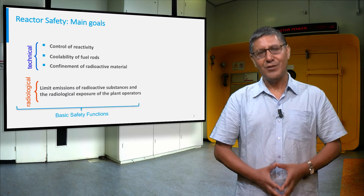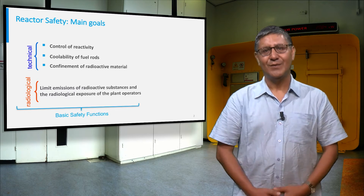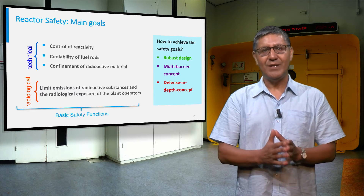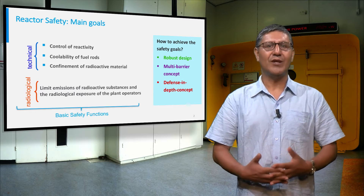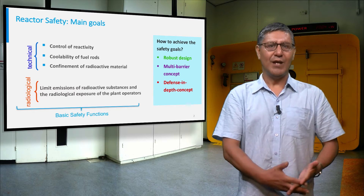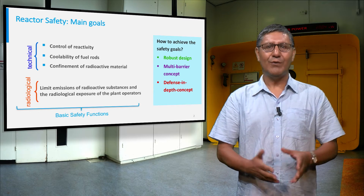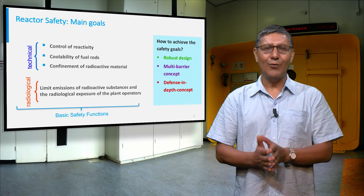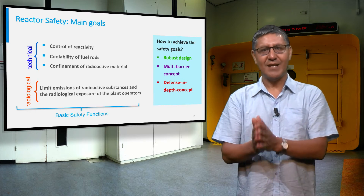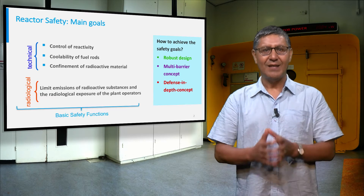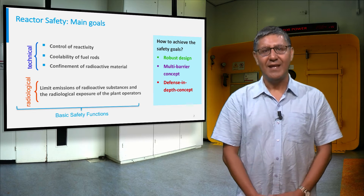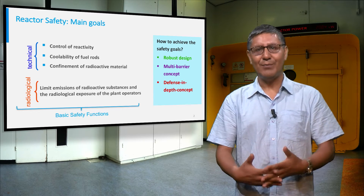The most important question is: how can these goals be achieved when designing a nuclear reactor? Today we will look at the following three methods: conservatism in design, the multibarrier concept, and the defense in depth concept.